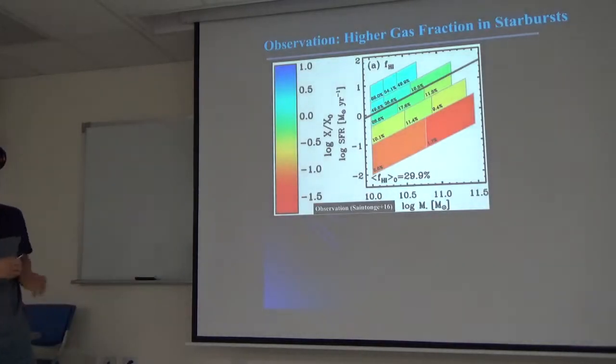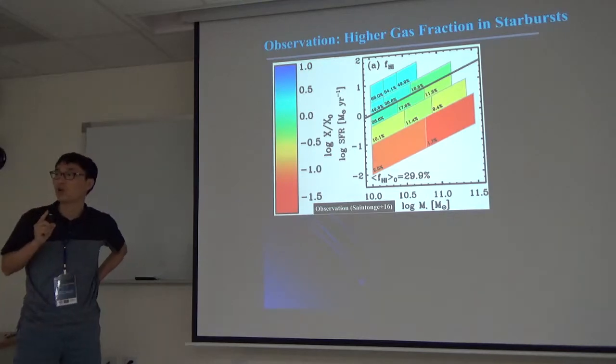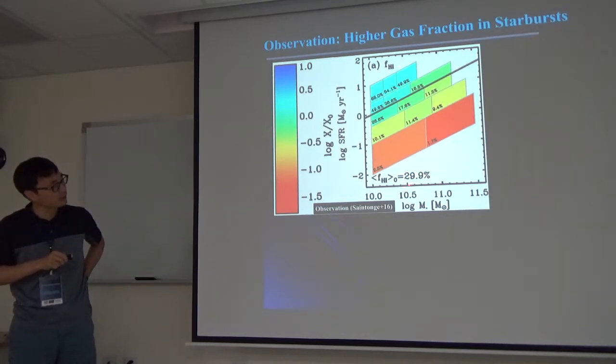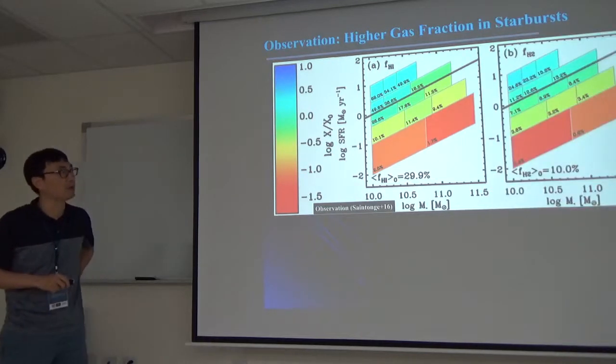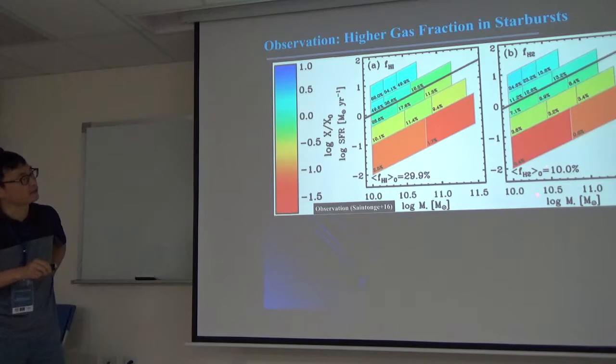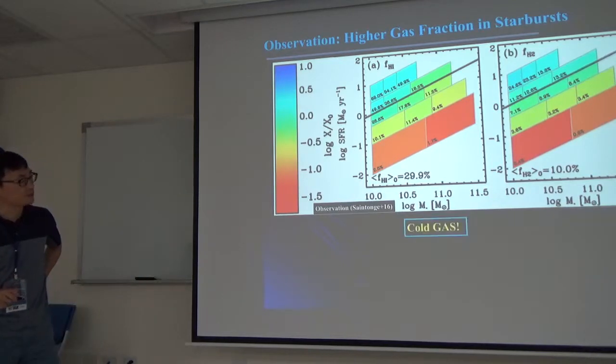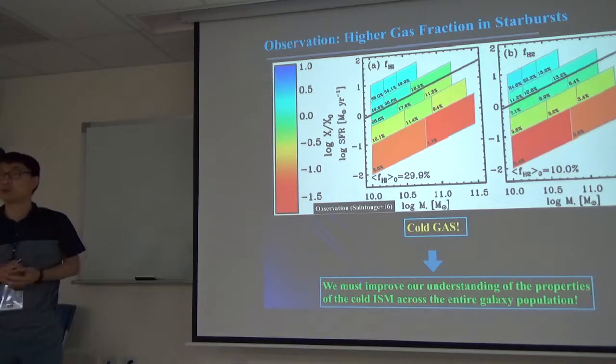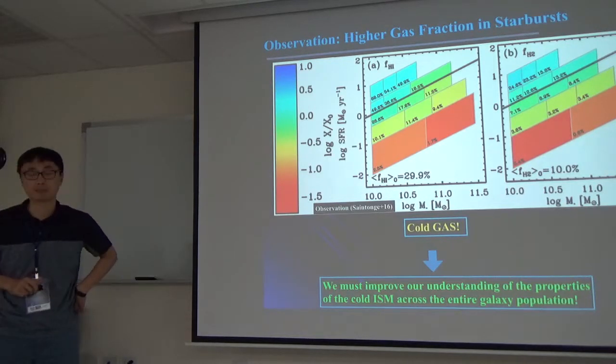So far the question would be what makes and what causes the difference between starburst and main sequence galaxies? We think interaction can be one cause. Another way we can think about this, here the y-axis is star formation rate as a function of stellar mass, color coded by their cold gas. In this case, the HI gas fraction. You can clearly see for a given stellar mass, HI gas fraction increases with star formation rate. You can make a similar plot but in this case with molecular gas fraction. Again, for a given stellar mass, molecular gas fraction increases with star formation rate, which means cold gas really plays an important role in determining the star-forming mode.